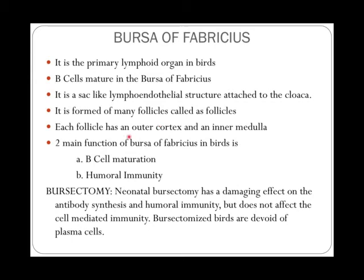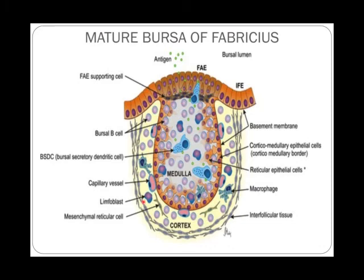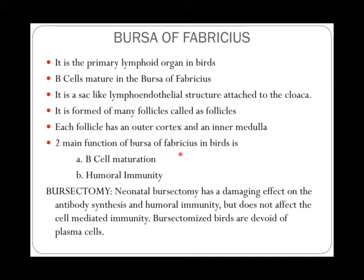The Bursa is formed of many follicles. Each follicle has an outer cortex and an inner medulla — this yellow region is the outer cortex and this is the inner medulla. Similar to the thymus structure, it also has an outer cortex and inner medulla. The two main functions of the Bursa of Fabricius are B cell maturation and humoral immunity.